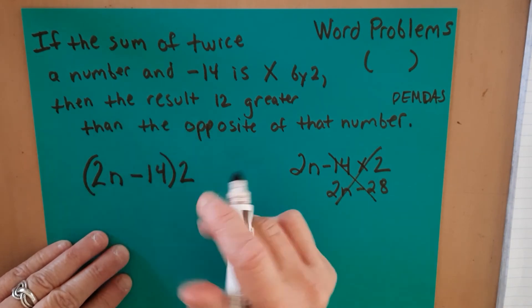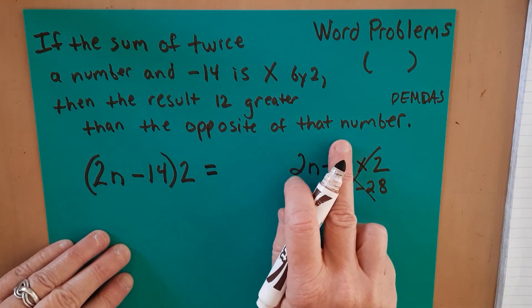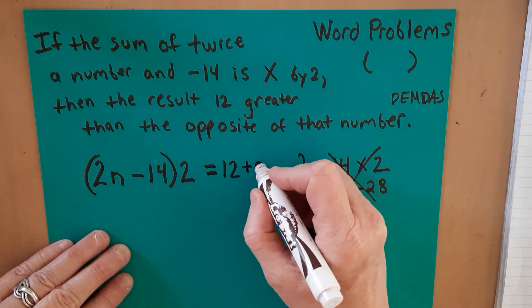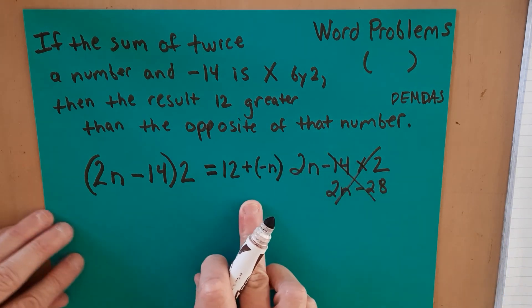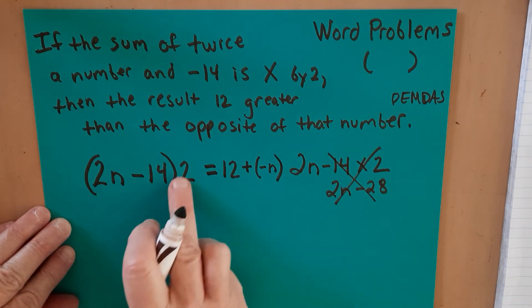It says the result then is 12 greater than the opposite of that number. So it's going to be 12 more than negative n. Let's go ahead and figure this out then. So doing the distributive property, we do 2 times 2n, which would be 4n,